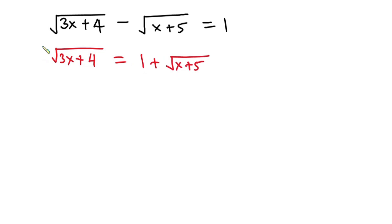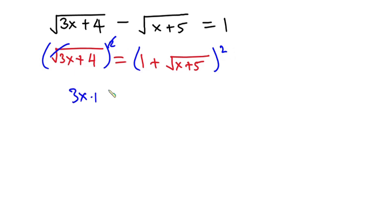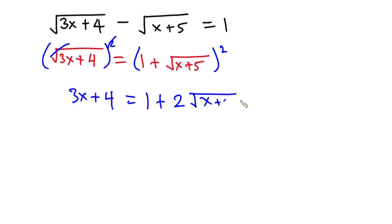Now I'm going to raise each side of the equation to the second power. The square root on the left will cancel, giving us 3x plus 4. On the right, expanding the square: 1 squared is 1, then plus 2 times the square root of x plus 5, then plus x plus 5.